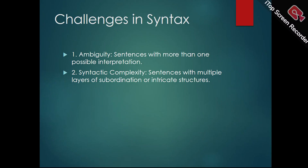Challenges in syntax. 1. Ambiguity: occurs when a sentence can be interpreted in more than one way due to its structure. For example, 'I saw the man with the telescope' can mean either that you used a telescope to see the man, or that the man you saw had a telescope. This ambiguity arises from the way words and phrases are arranged. 2. Syntactic complexity: refers to sentences with multiple layers of subordination or intricate structures, making them difficult to parse or understand. For instance, 'the book that the student who won the prize wrote was published last year' contains several embedded clauses, adding complexity especially in languages with flexible word order.